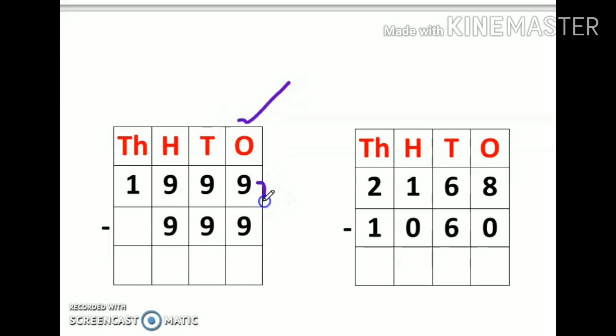Next example, I have these two numbers. I'll start from ones place. Nine minus nine is zero, nine minus nine is zero, nine minus nine is zero. And here there is no number, so it means here is zero. So one minus zero is one. So my answer is 1,000.